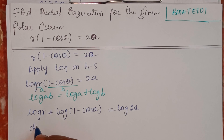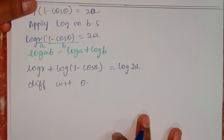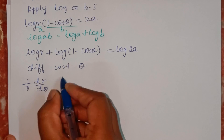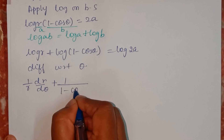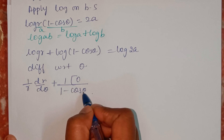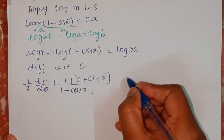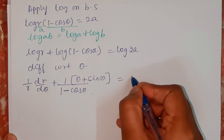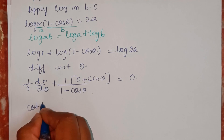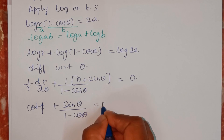Now we will differentiate with respect to theta. It becomes (1/R)(dr/dθ) plus 1 divided by (1 minus cos theta) into the differentiation of (1 minus cos theta). The differentiation of 1 is 0, and cos theta gives minus sin theta, but we already have a minus, so minus into minus gives plus sin theta, equals 0. Since (1/R)(dr/dθ) equals cot φ, we have: cot φ plus sin theta divided by (1 minus cos theta) equals 0.